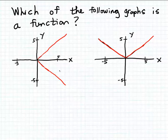Okay, in this example, we want to determine which of the following graphs here is a function. So recall that a function is a relation, but it's a relation that has a special property. It's a relation where each input matches one and only one output.